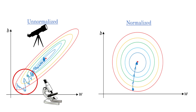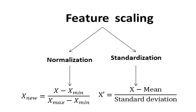The fix is simple but important. Standardize your features to zero mean and unit variance, or scale them between zero and one. This puts everything on an equal playing field, letting your model focus on finding real patterns in the data.